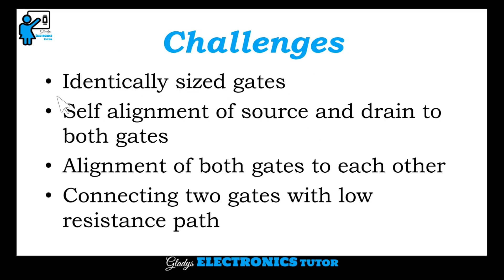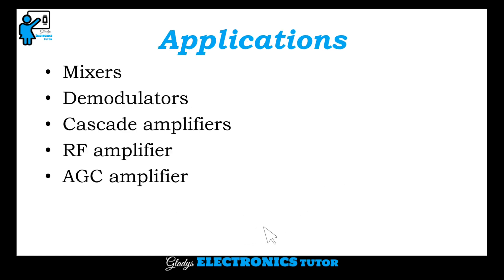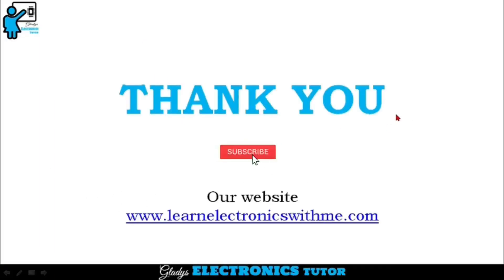The challenges are: identically sized gates, self-alignment of source and drain to both gates, alignment of both gates to each other, and connecting the two gates with a low resistance path. The applications include mixers, demodulators, cascode amplifiers, RF amplifiers, and AGC amplifiers. Thank you for watching — if you liked the video, please like, share, and subscribe.